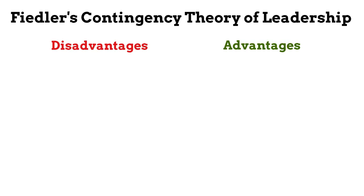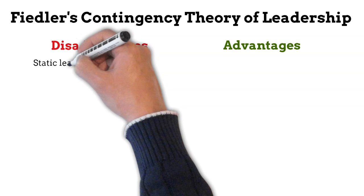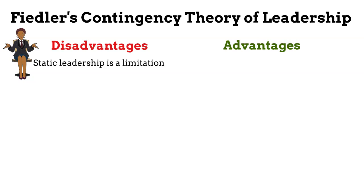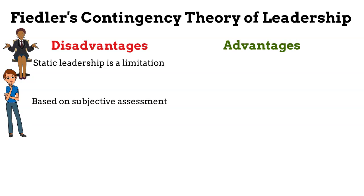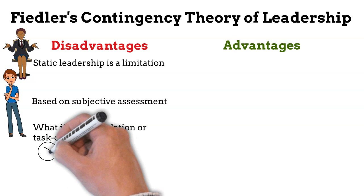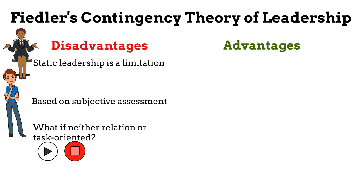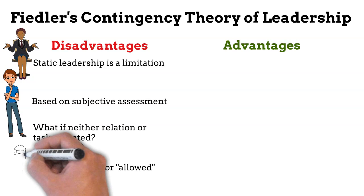There are some obvious disadvantages of Fiedler's contingency model. First, it assumes static leadership behaviors and can end up limiting leaders from even trying to change their ways. Second, the LPC scale and situation dimensions are all based on subjective judgment — assess any part the wrong way and the guidance is likely to be wrong. Third, only two behaviors mean that a high or low LPC score gives clear guidance, but if you end up getting an in-between score, your behavior is inconclusive. Fourth, it assumes that leaders are either relationship or task-oriented, whereas modern research concludes that a leader can in fact be both.